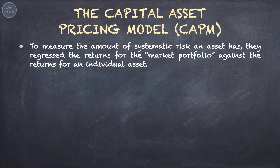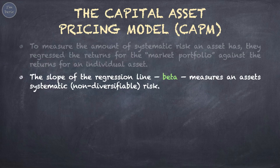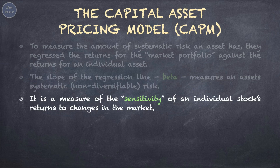To measure the amount of systematic risk an asset has, they regress the returns for the market portfolio against the returns for an individual asset. The slope of the regression line, beta, measures an asset's systematic or non-diversifiable risk. It is a measure of the sensitivity of an individual stock's returns to changes in the market.